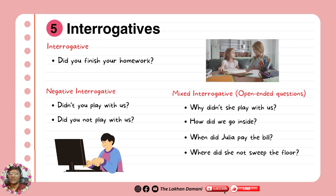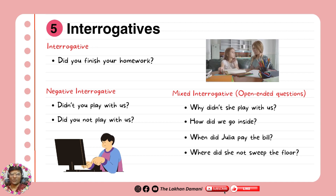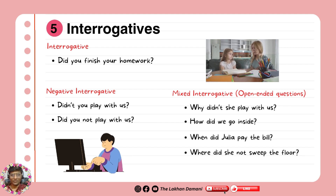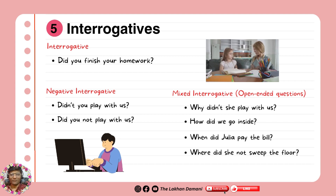Number five: interrogatives. Why interrogatives? Because I'm going to show you a mixture of them. For example, did you finish your homework? That's very common — we use it when we want to ask about something that already happened or not. For negative interrogative: didn't you play with us? Or did you not play with us? — that's what I already taught you in the previous part.